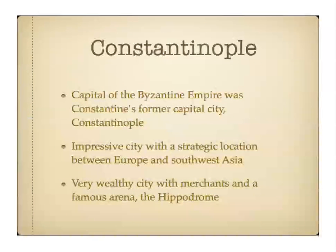Focusing on Constantinople, the capital of the Byzantine Empire — remember, Constantinople was essentially the city of Constantine from the former Roman Empire. It ended up being a very impressive city largely because of its strategic location, situated halfway between Europe and Asia. It became a very wealthy city — you saw roads filled with merchants, and famous buildings like the Hippodrome, which was an arena where they had live entertainment.